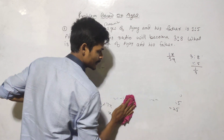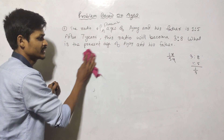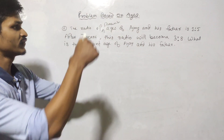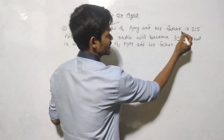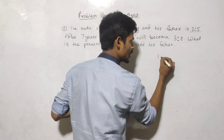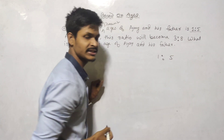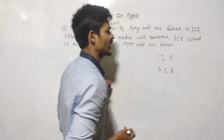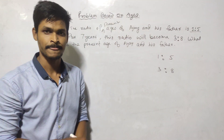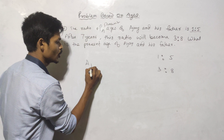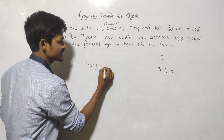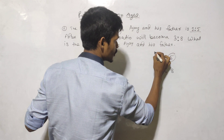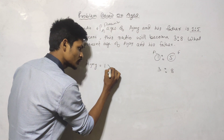We will show you the trick. First, we apply the trick. The first ratio is 1 to 5. After 7 years the ratio becomes 3 to 8. Let's see the present ratio.